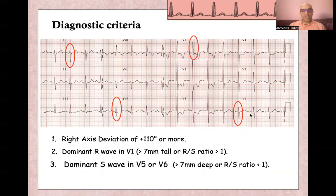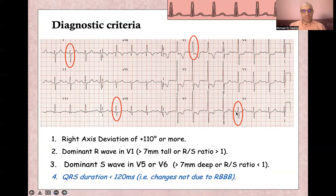Dominant S wave in V5 or V6 more than seven millimeters, or R:S ratio less than one. And of course, narrow complex — narrow QRS complex.